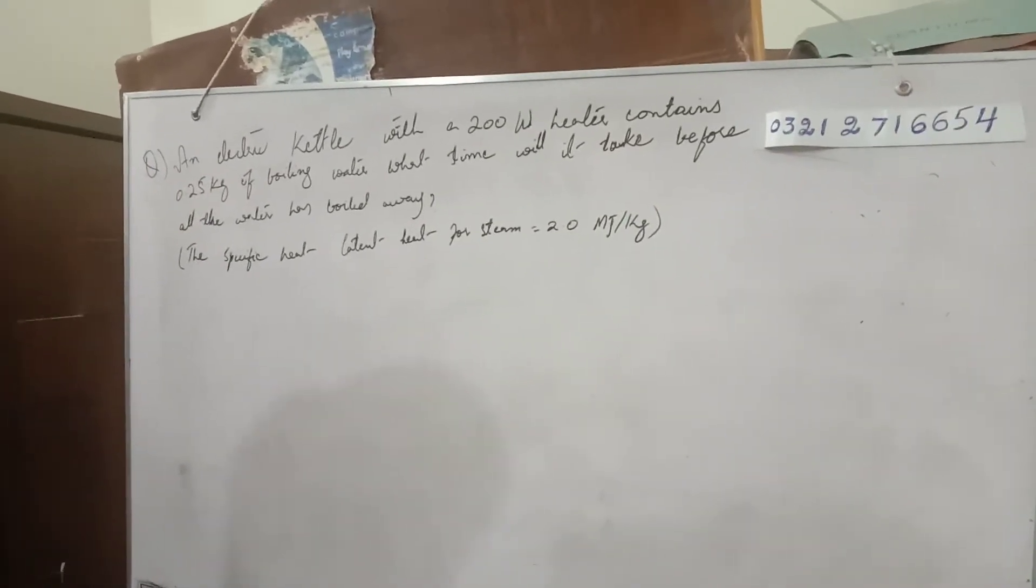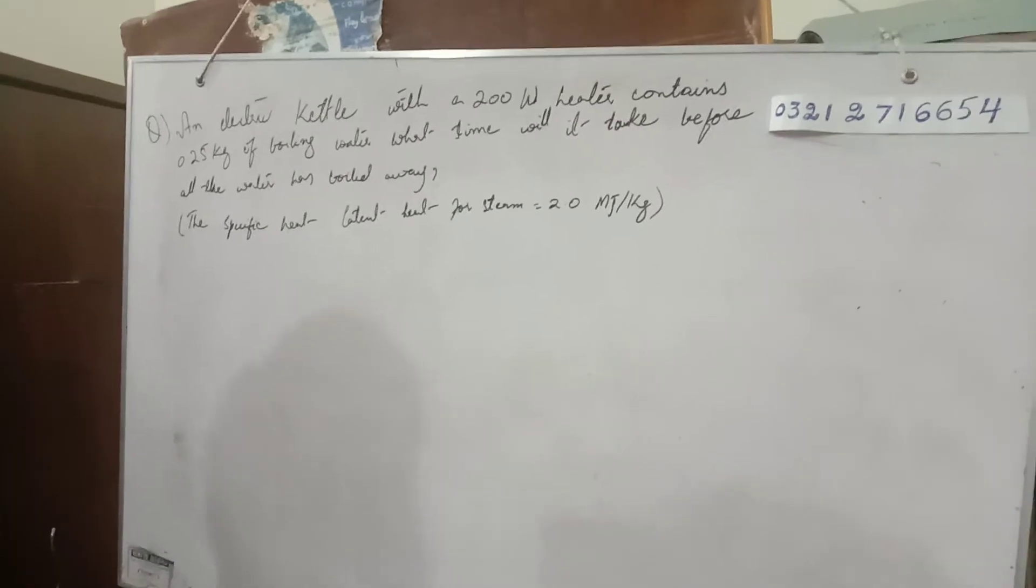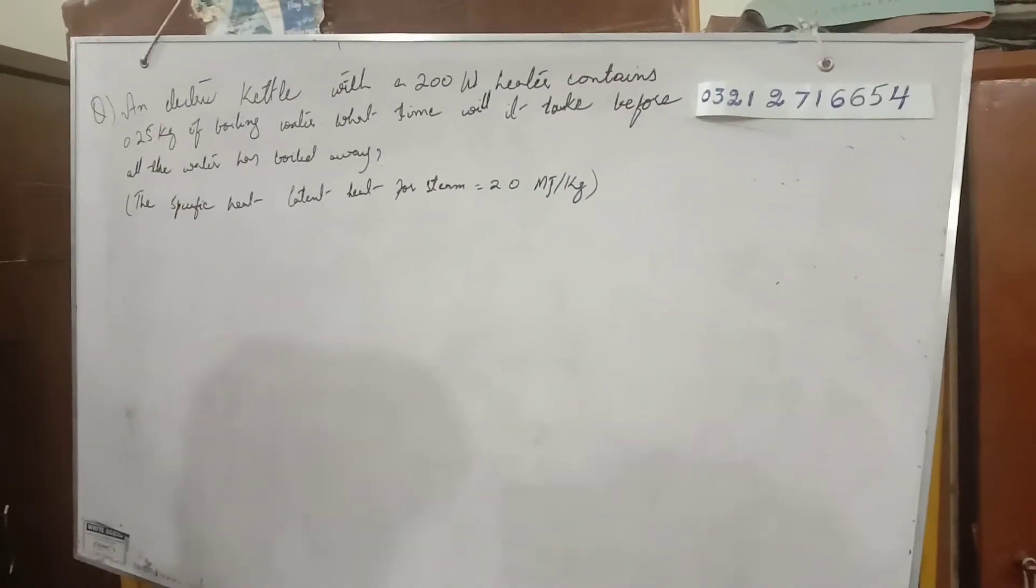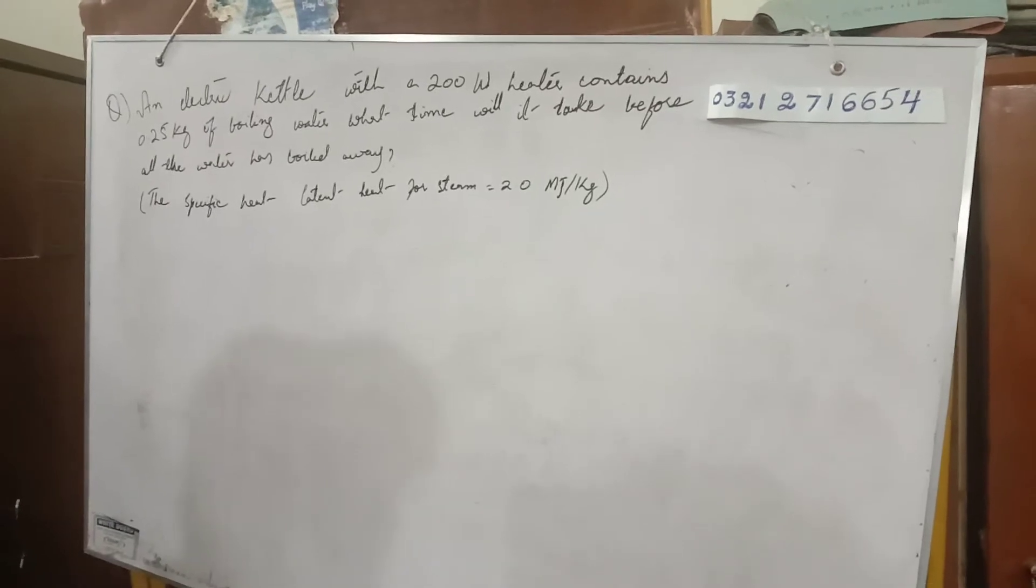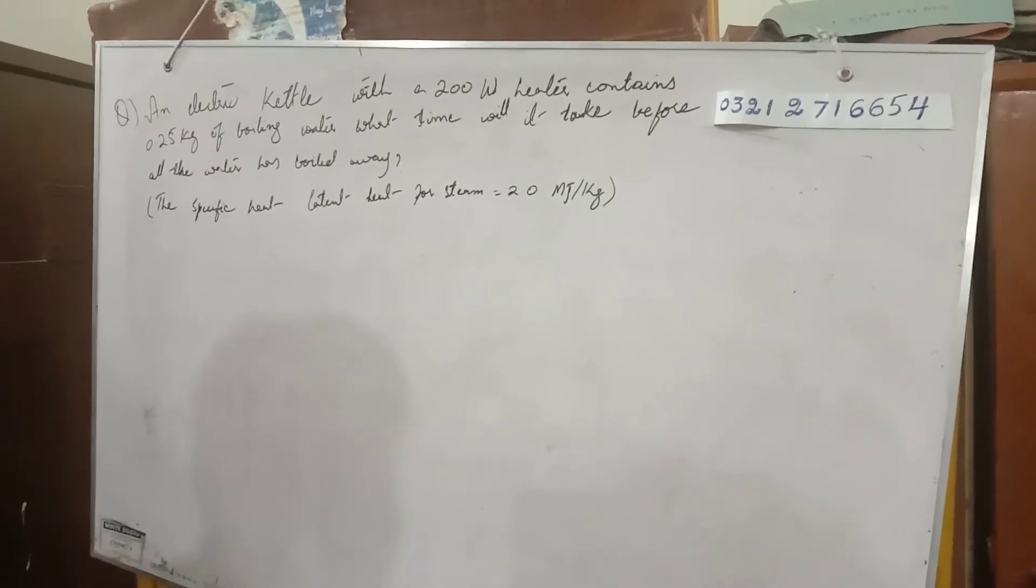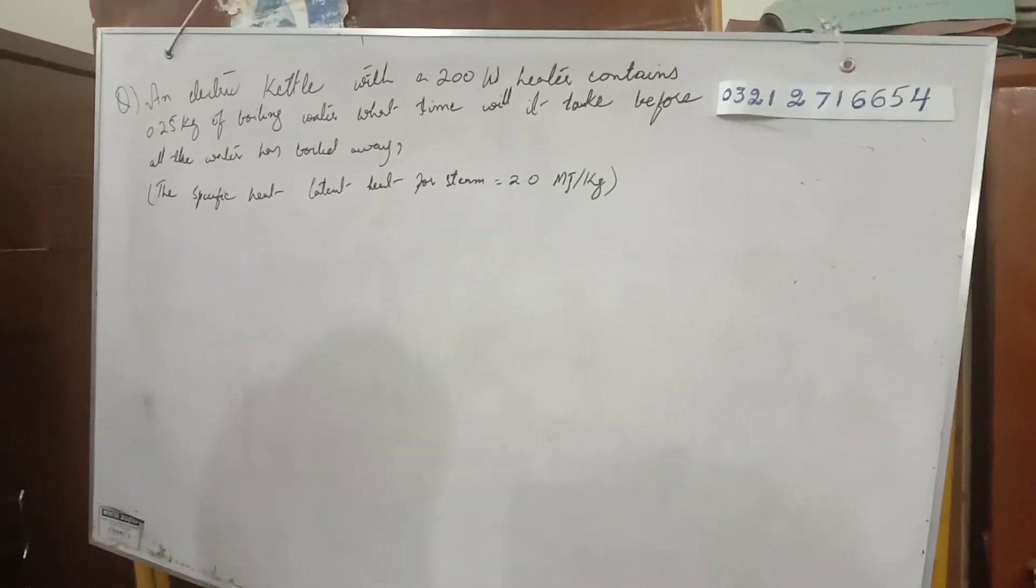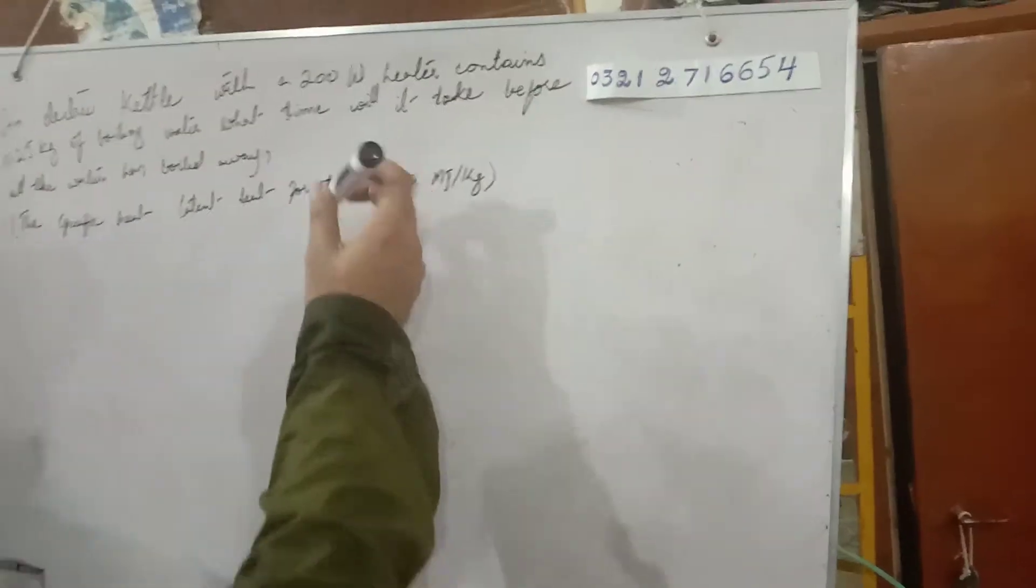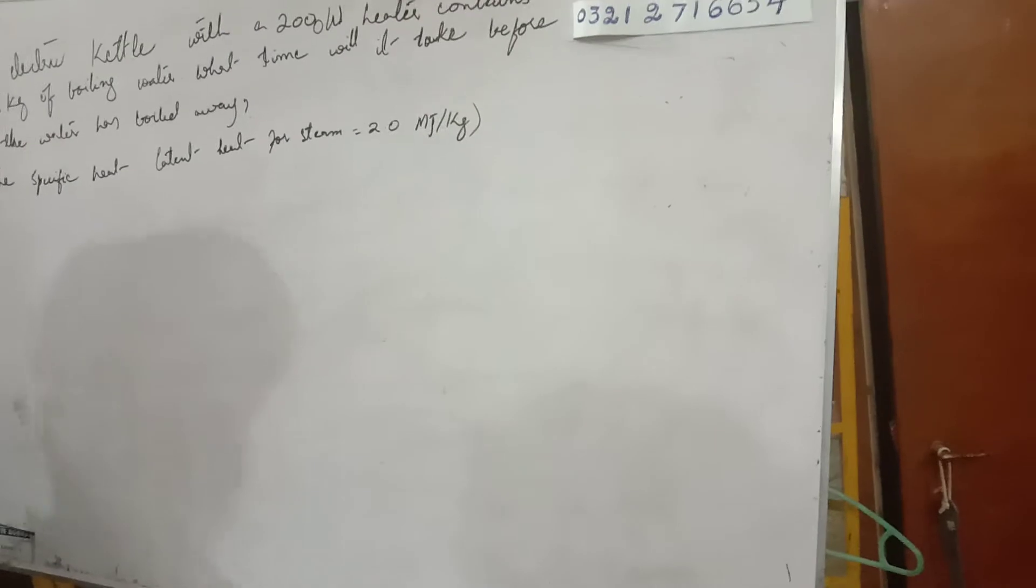An electric kettle with a 2,000 watt heater contains 0.25 kg of boiling water. What time will it take before all the water has boiled away? We need to use the specific latent heat formula.